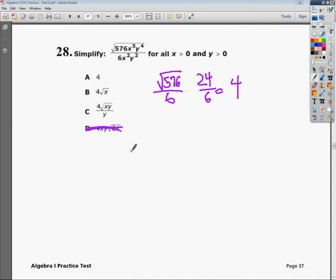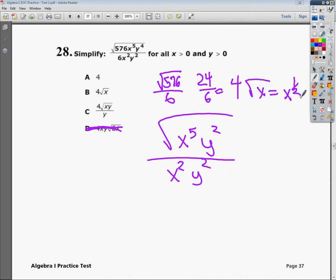Now let's look at the square root of x to the 5th over y to the 2nd. And that's going to be eventually over regular x squared, y squared. So the idea of taking a square root of something is essentially the opposite of squaring it. So I could say that the square root of x is equal to x to the 1 half.